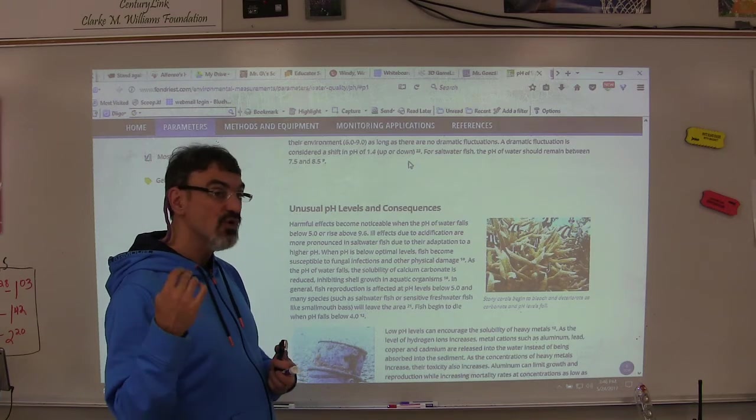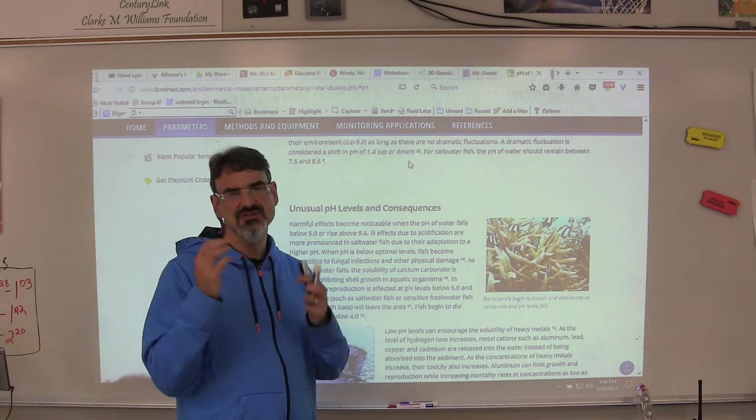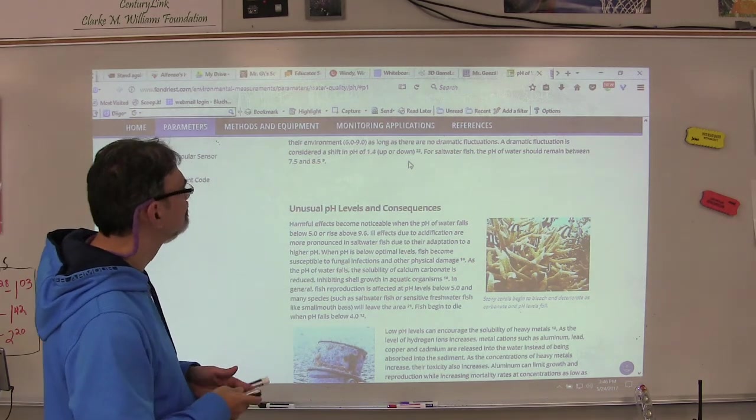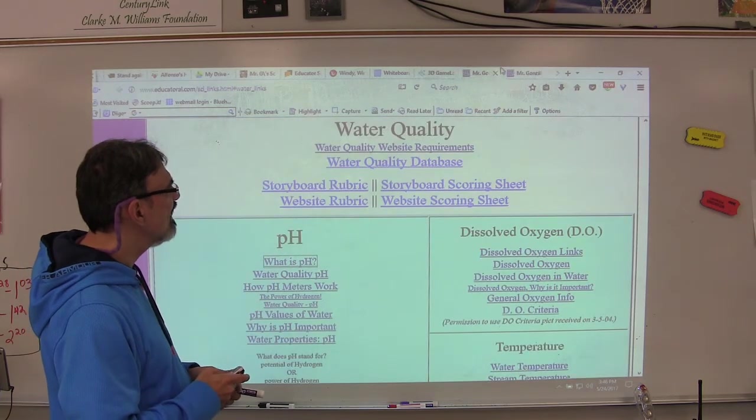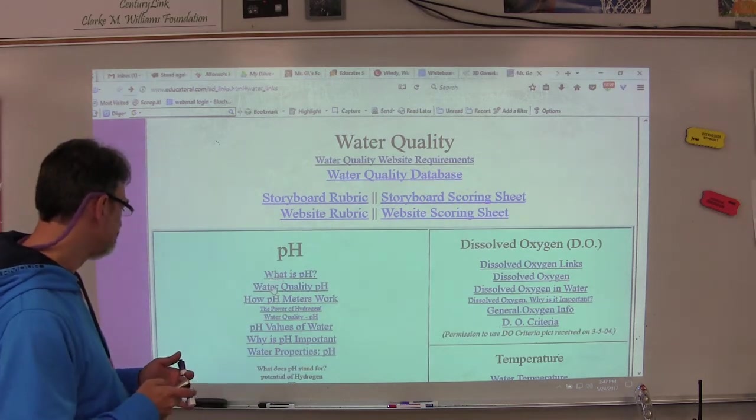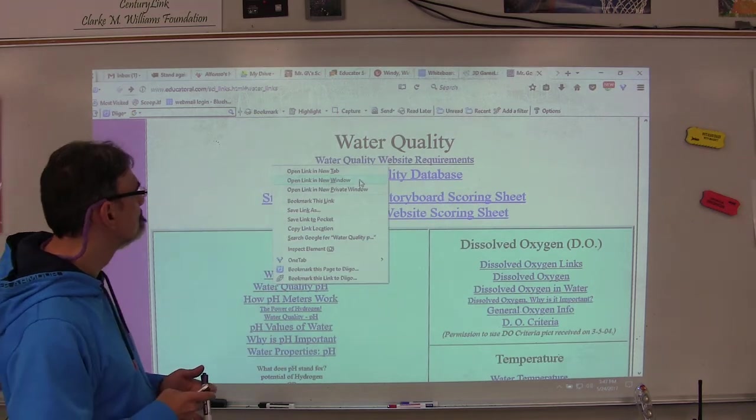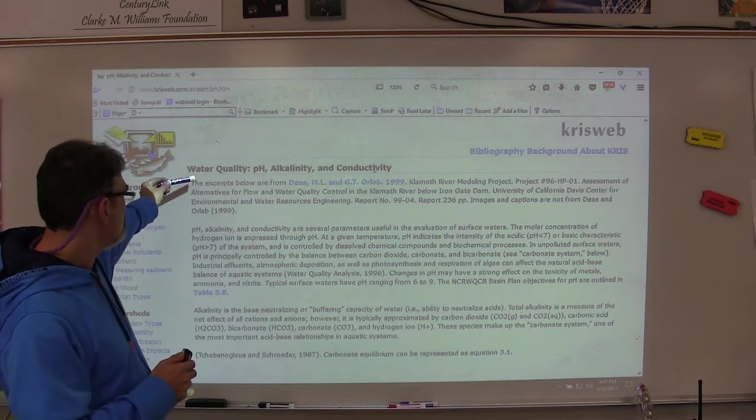And then luckily our creek doesn't have this, because harmful effects become noticeable when the pH of water falls below 5 or rises above 9.6. So hopefully this will give you some information. Let's check out the next pH website, see what it has.